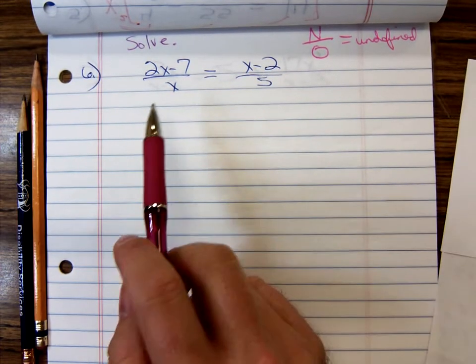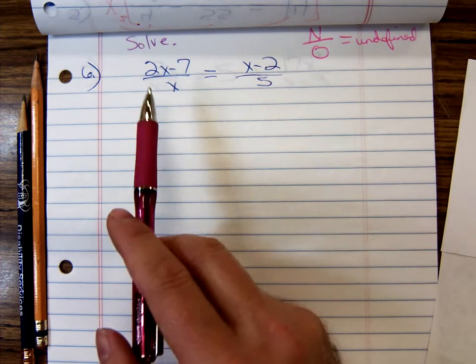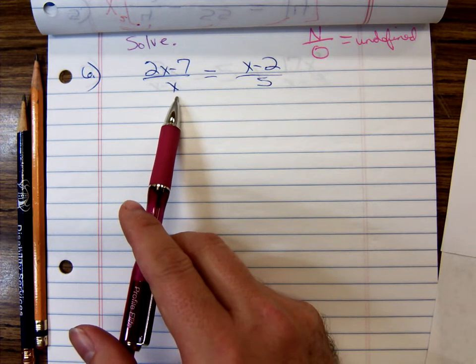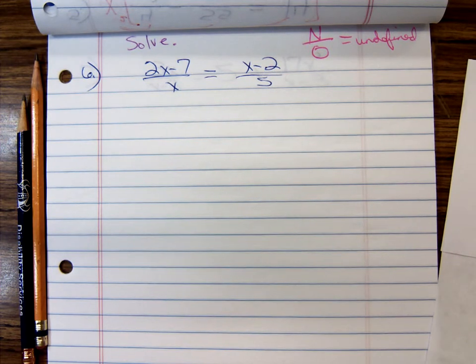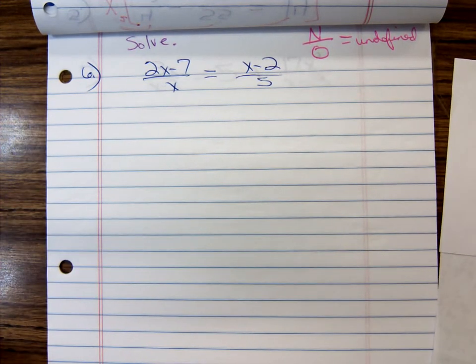So, when I look here, that second denominator, there's always going to be a 5. It's never going to be a 0. But, this denominator will be 0 when x equals 0. So, as long as we don't get a 0 for x, then everything's fine. But, if we get a 0, we're going to have to discard that number as a potential solution.